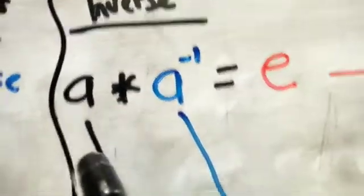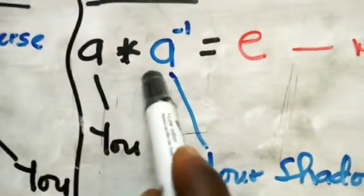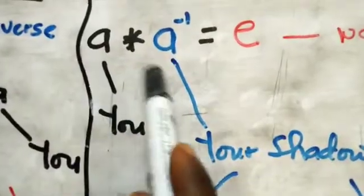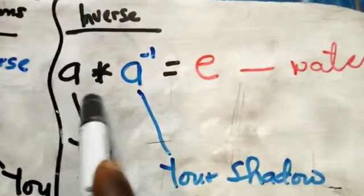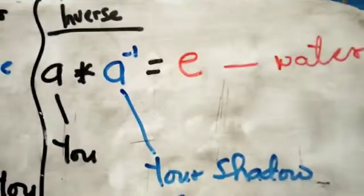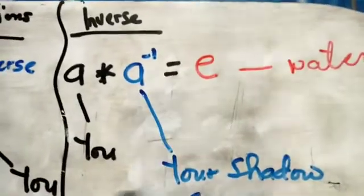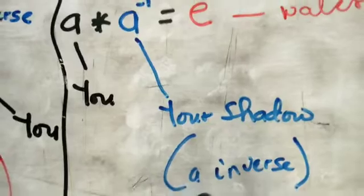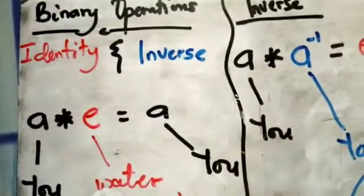Now the inverse: when you take yourself and your inverse and combine them, it must give you the identity element. Think of it as your shadow — when you combine yourself and your shadow, you produce the identity. So combining you and the inverse of you gives the identity.